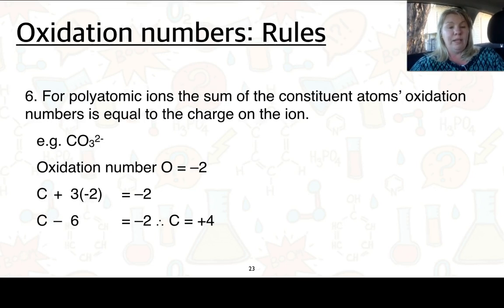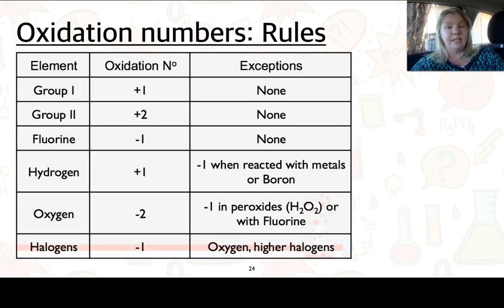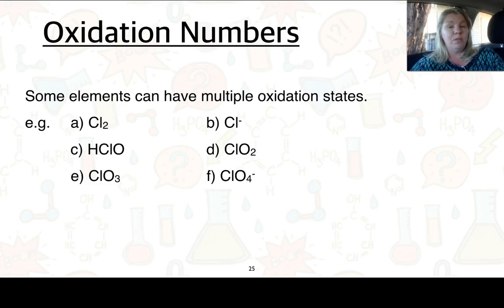Rule 6: for a polyatomic ion, the sum of all the atoms' oxidation numbers is equal to the charge on the ion. Previously we've been looking at them all equaling zero, but now altogether it has to equal the charge on the ion. So for CO3 2−, all up it must equal −2. Carbon plus 3×(−2) equals −2, solving through gives carbon equaling +4. Here are the rules again in tabulated form. We can have some elements with multiple oxidation states — look at chlorine in each example and work through to show that chlorine has a different oxidation state in each case. We'll go through the solutions in class.